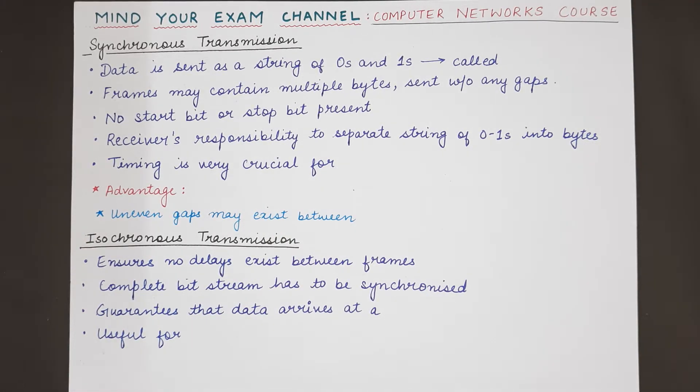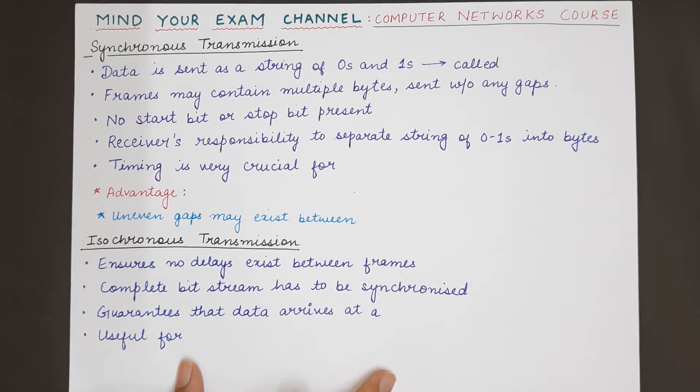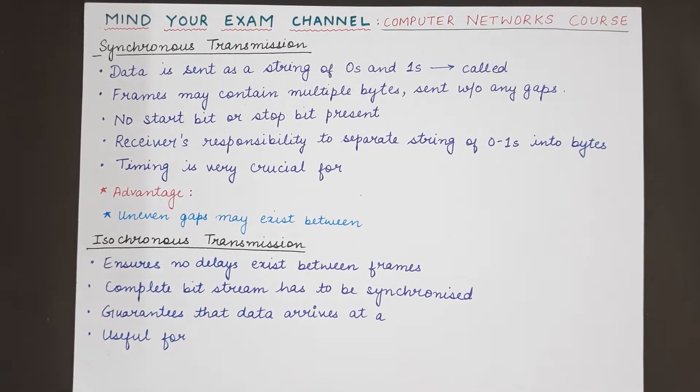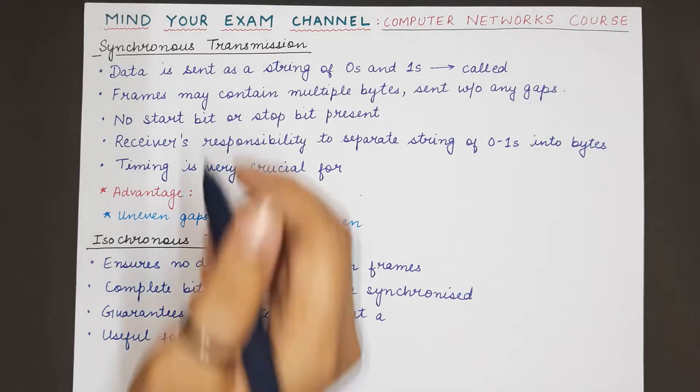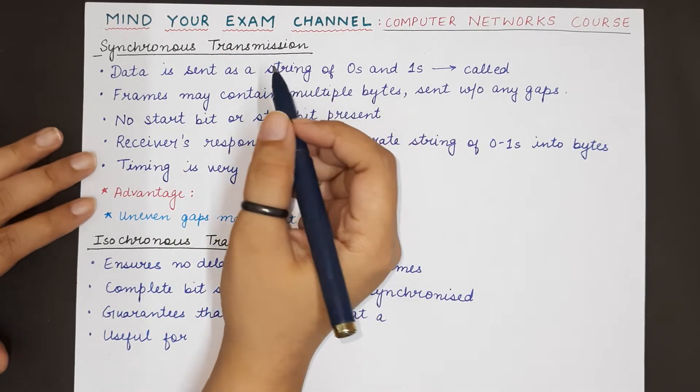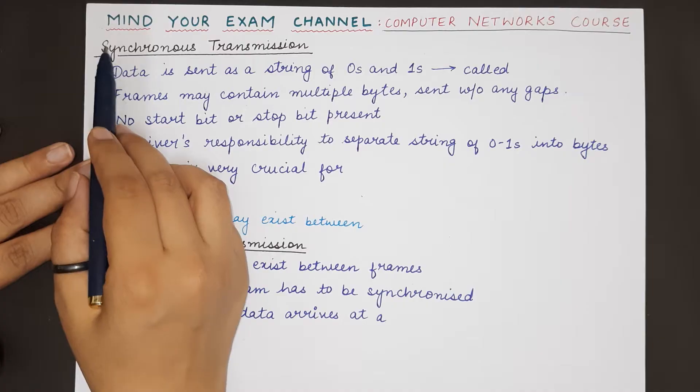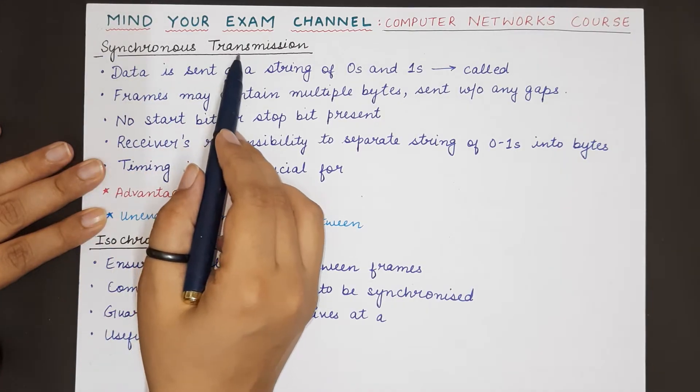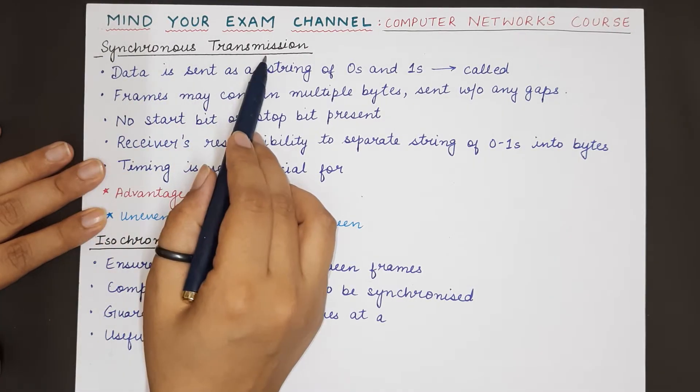kinds of transmission: parallel transmission and serial transmission. We saw that the first kind of serial transmission was asynchronous transmission. In this video we will be studying the second type of serial transmission, which is synchronous transmission.